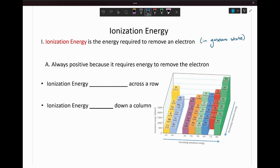The way that this looks is: let's say we have sodium in its gaseous state. We're going to be looking at making that sodium into a positively charged cation. What we're doing is removing an electron from the sodium — we're putting in energy in order to have that electron ejected.